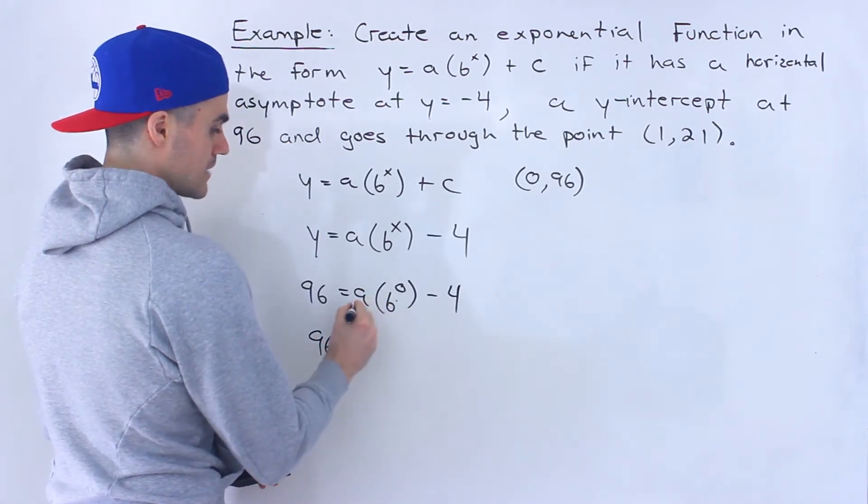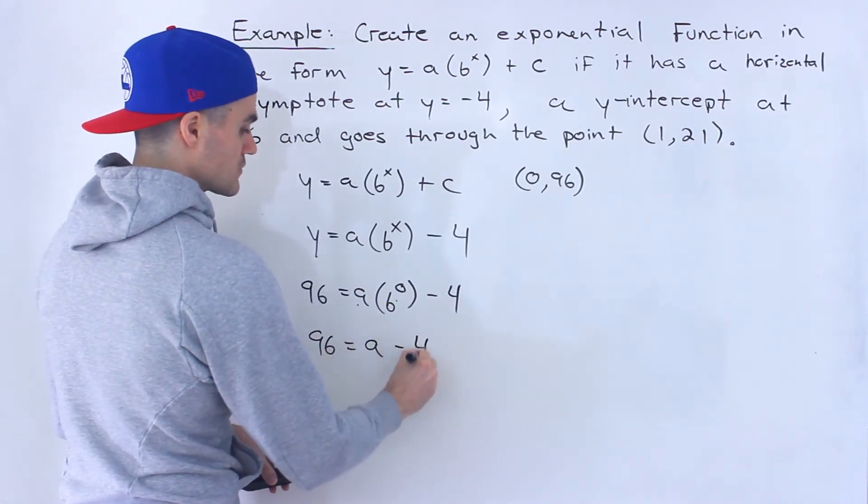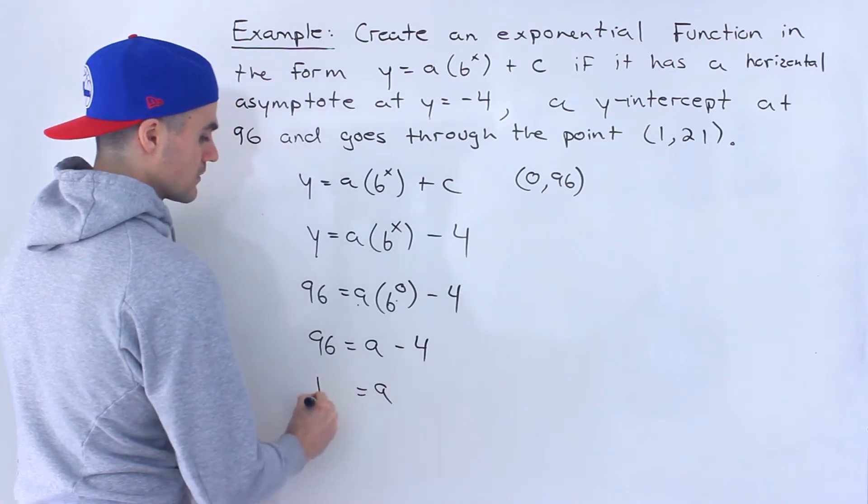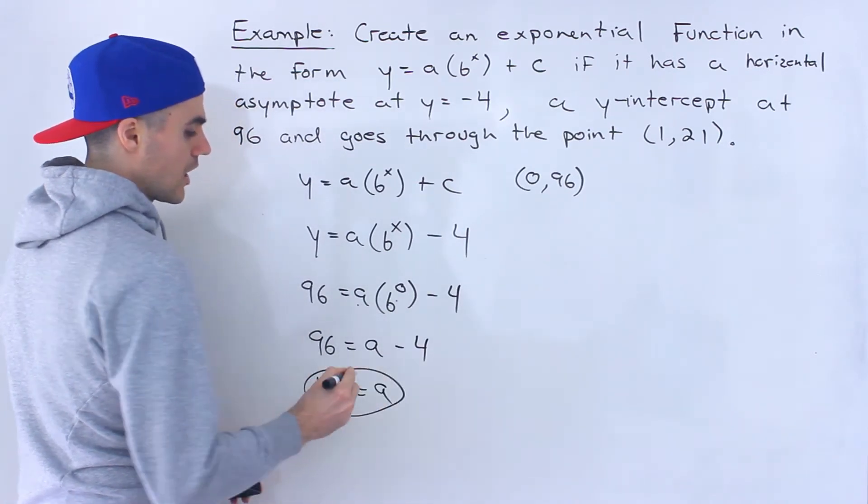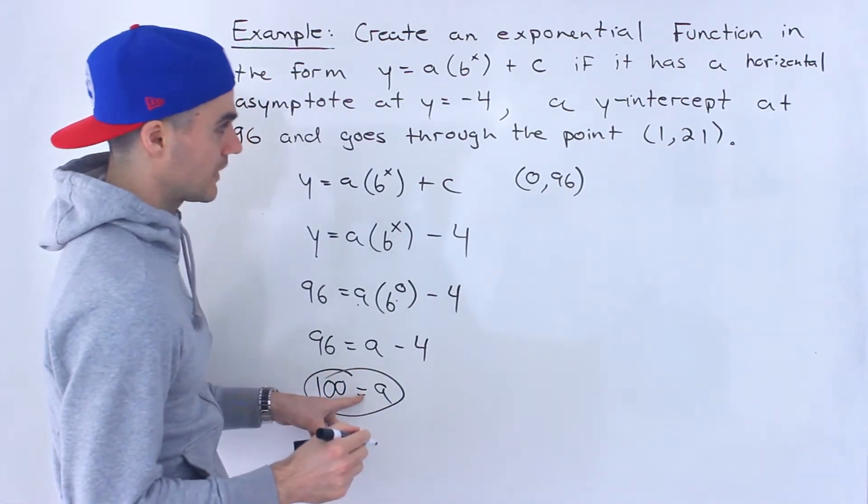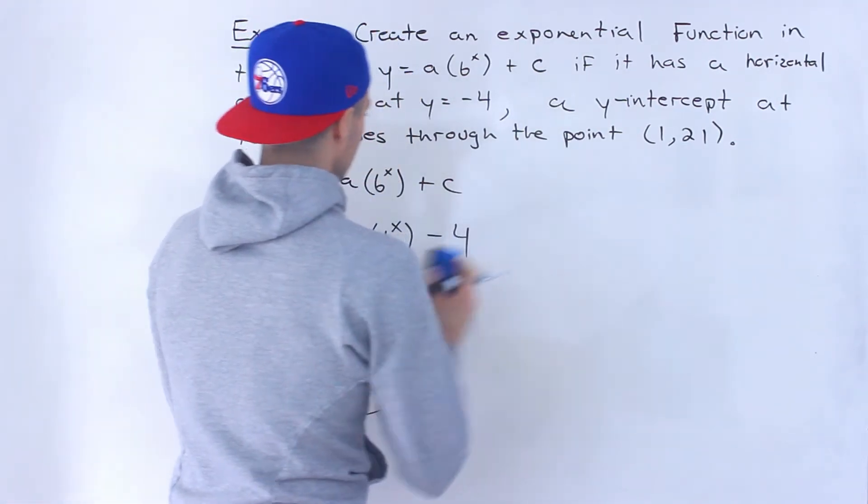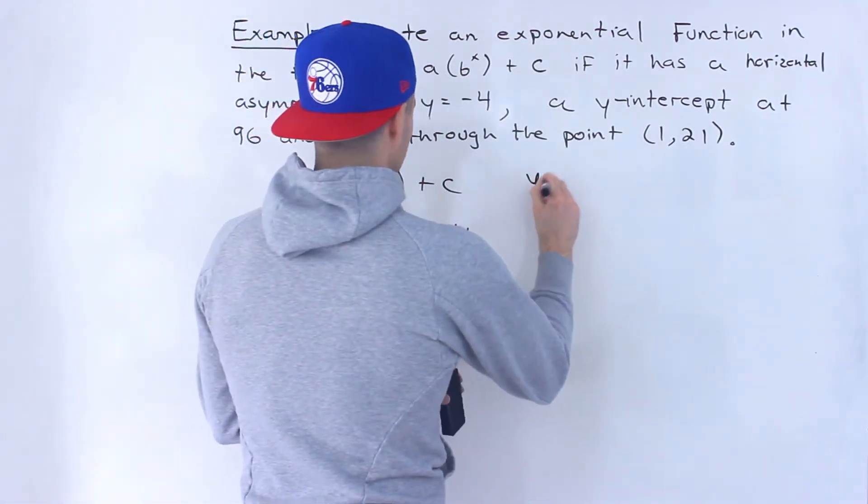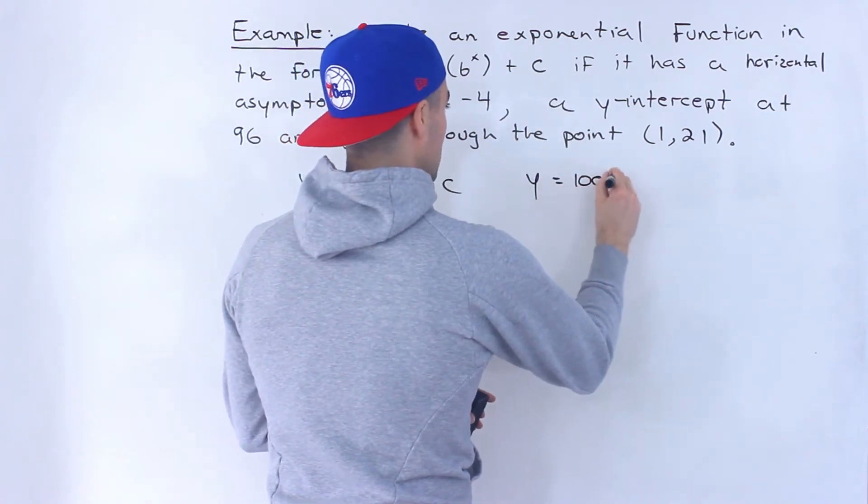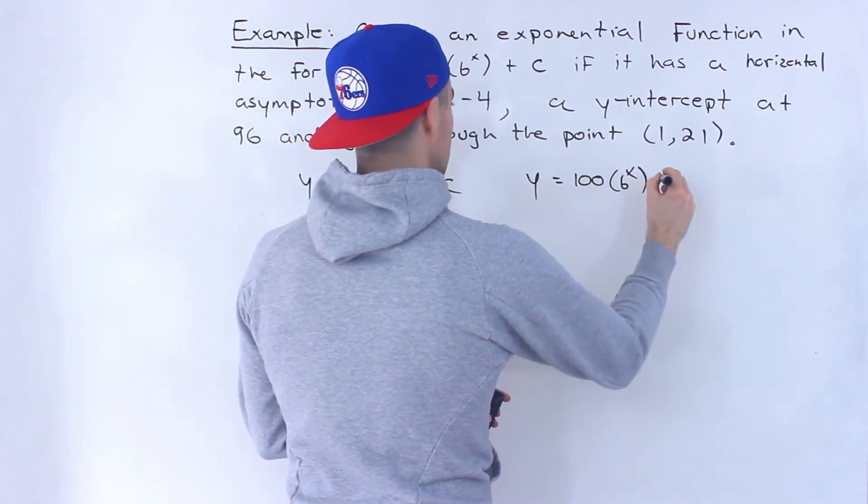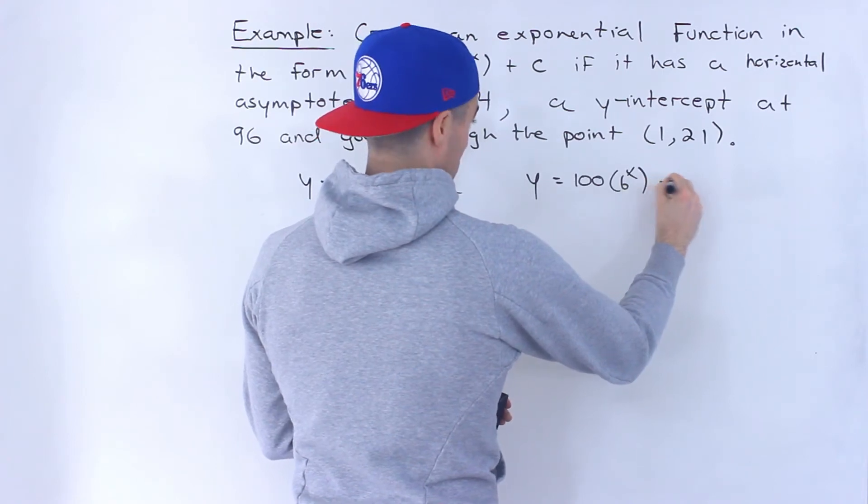So we'd have 96. 1 times a is just a, and then we'll have minus 4. So notice that the a value is 100, and we're able to get that with the y-intercept. And then if we update this function, we got 100 times b to the power of x minus 4.